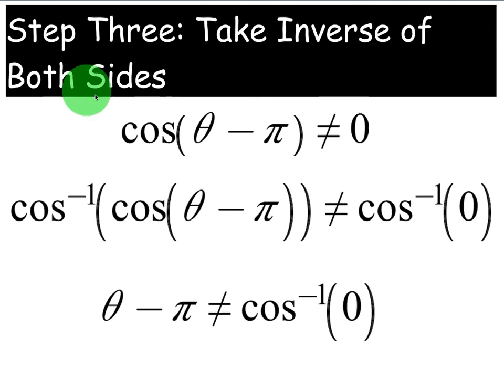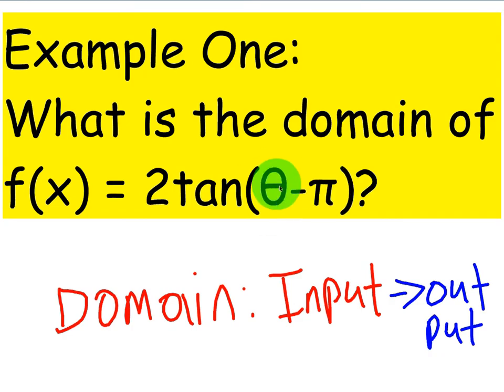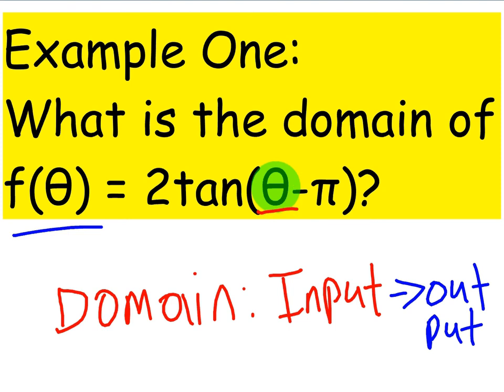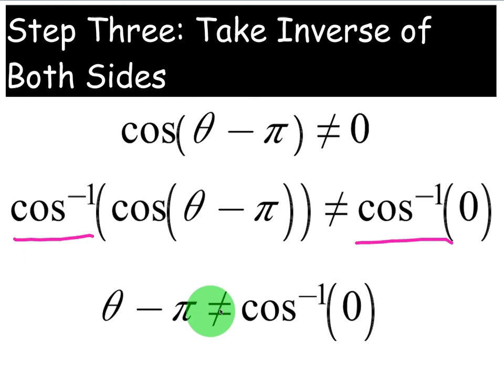Step three is to take the inverse of both sides. In order to get rid of this trig function on the left, I have to take the cosine inverse. Let's go ahead and underline that in pink. If I do it to the left, I have to do it to the right. That cancels the cosines right here. And I'm left with theta minus pi is not equal to cosine inverse of zero. Why are we doing this step? It's because we want to get theta by itself because theta is our domain. If you get back to this equation, theta is the input. Let's underline that in red. And f of x, I should say f of theta is the output.